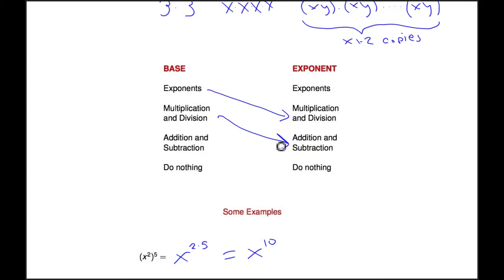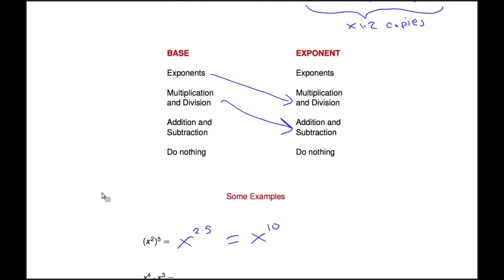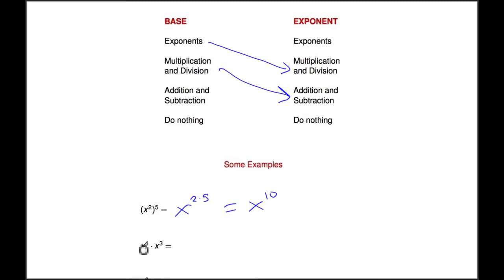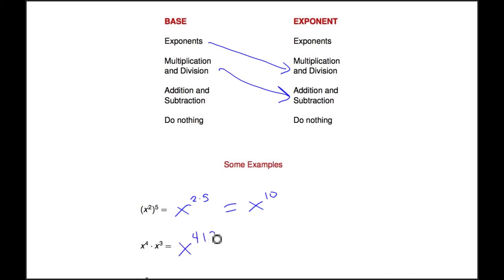Similarly, if you have multiplication and division of your base, that means you're going to add or subtract the exponents. So let's see an example of that. Here we have x to the fourth times x cubed. We're multiplying things with the same base, and what we're going to do is add the exponents. This gives us x to the four plus three, or x to the seventh.